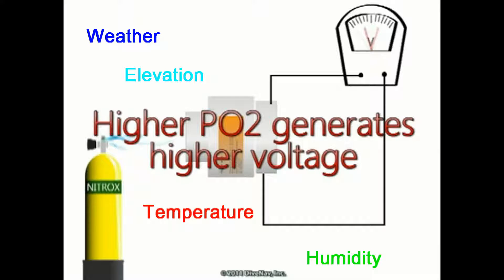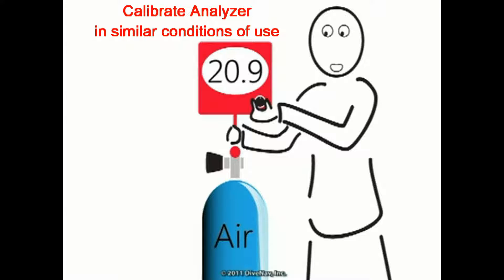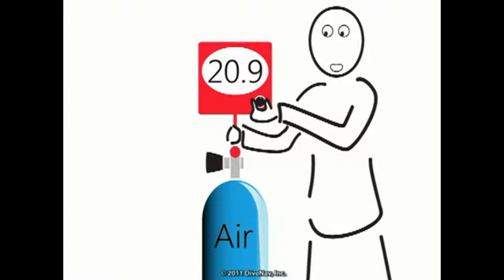Additionally, the oxygen sensor is also affected by changes in temperature and humidity. Therefore, before you use an oxygen analyzer, it must be calibrated with a known reference gas used in similar conditions as the gas you want to analyze. There are three methods to performing an oxygen sensor calibration.